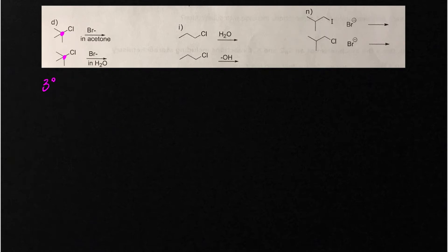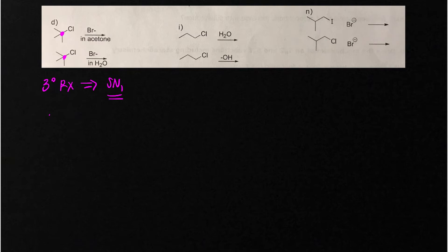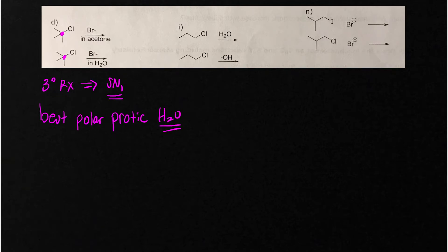In letter D, we have two tertiary alkyl halides, which mandates SN1. SN1 is best favored by polar protic solvents like water, ethanol, and methanol. Water is the best polar protic solvent here, and therefore it makes the reaction fastest.